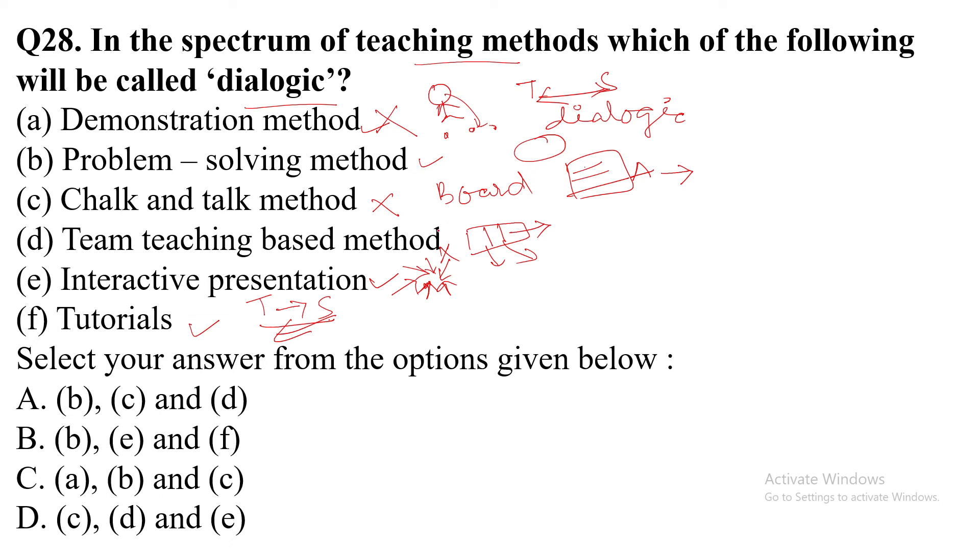So what are the options? Option number B, then E and F. Select your answer from the options given below.